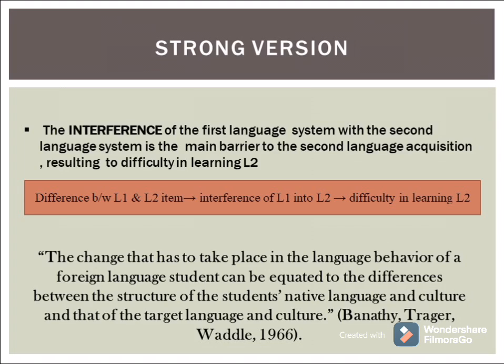To get along with our discussion, let us first define what is language interference. It refers to the effect of a language learner's first language on their production of the language that they are learning, or their target language. The effect can be in any aspect of language — this can be in the grammar, vocabulary, accent, spelling, and so on.